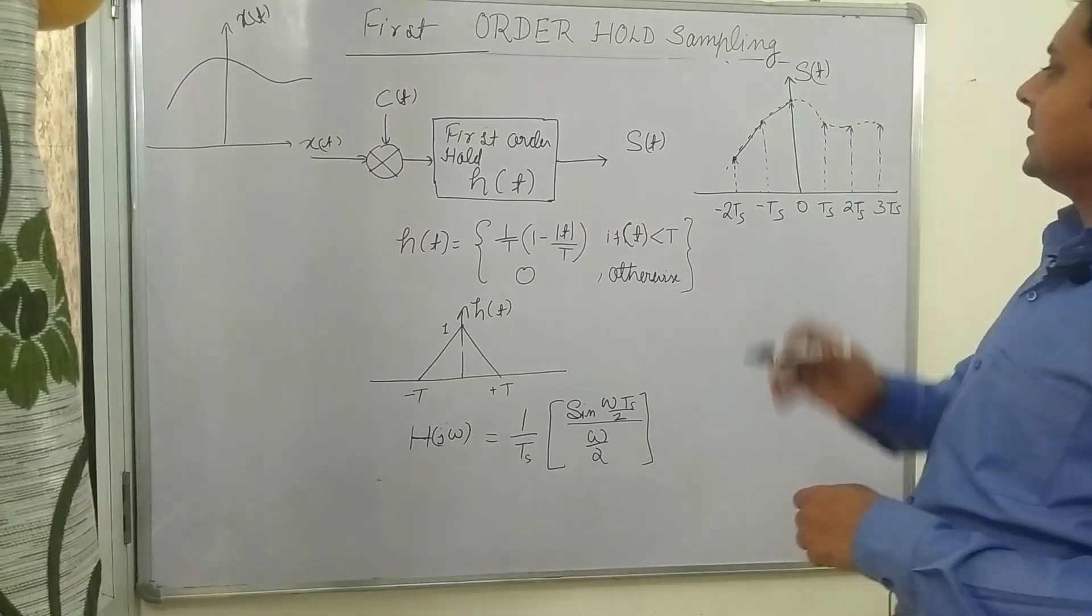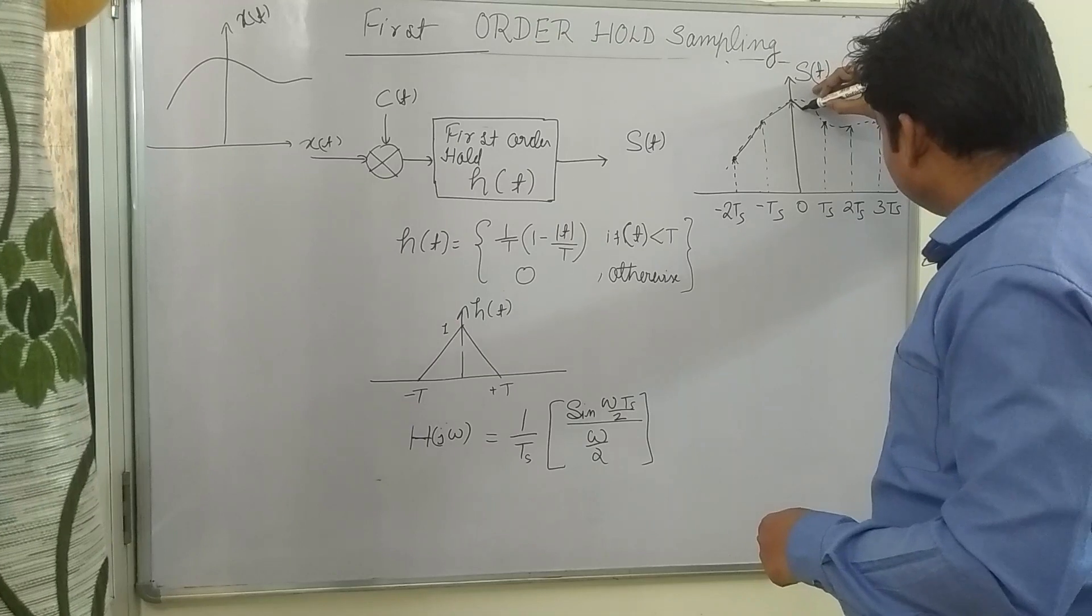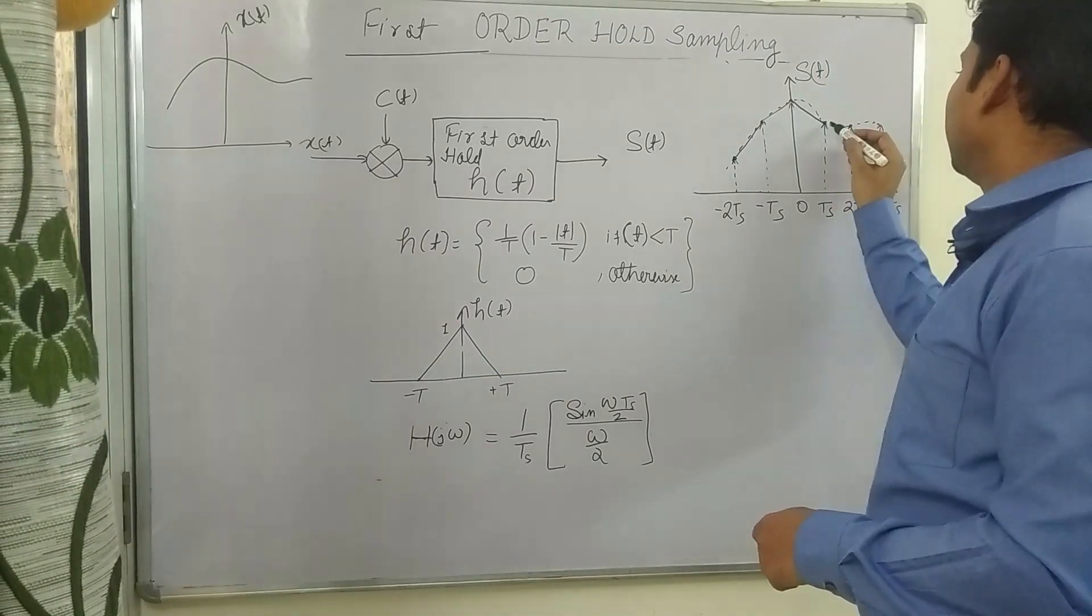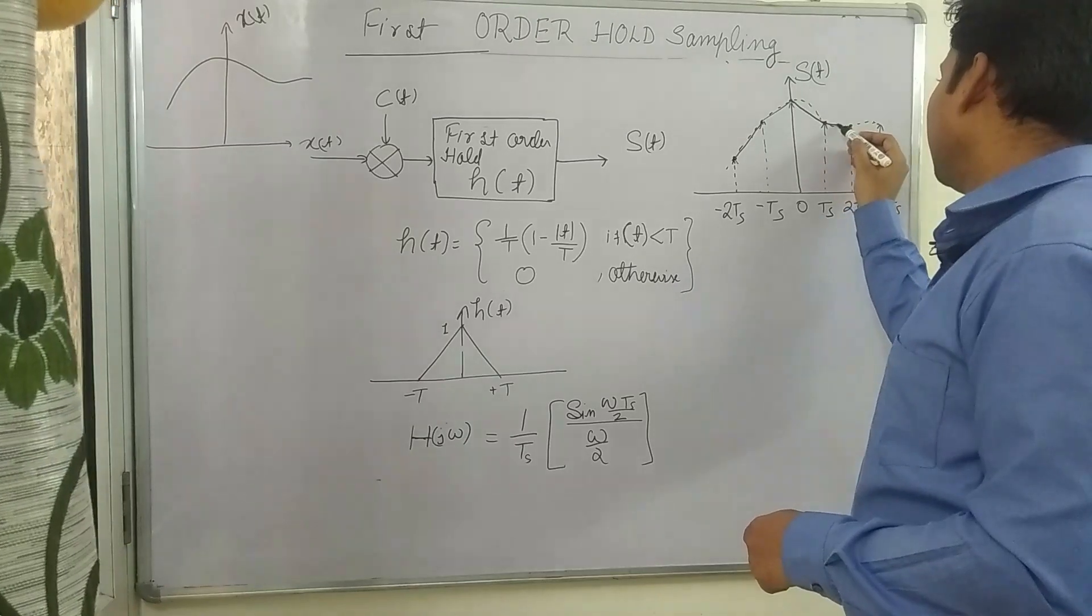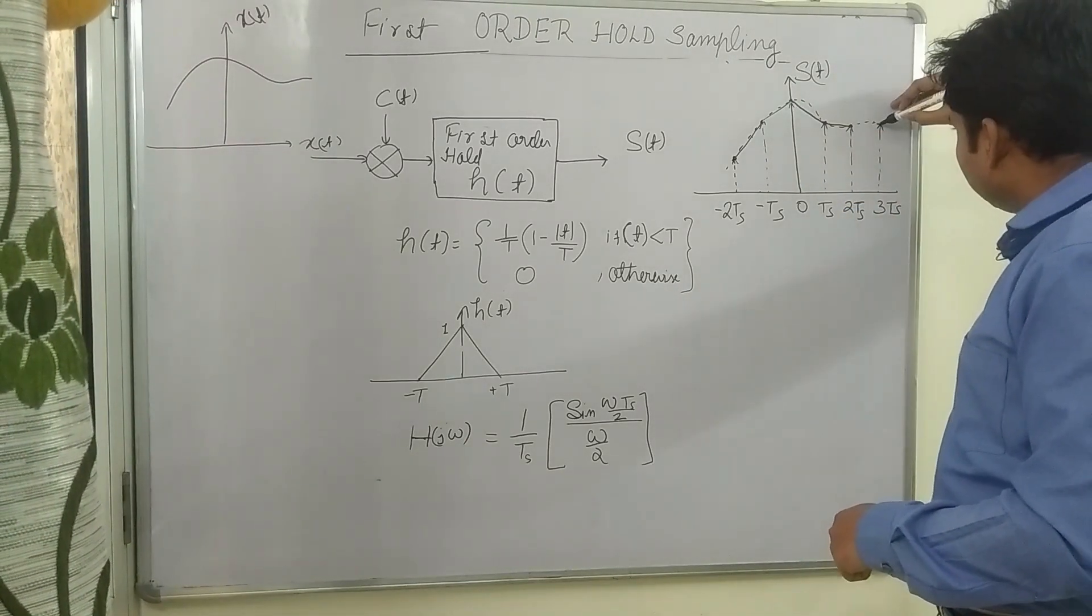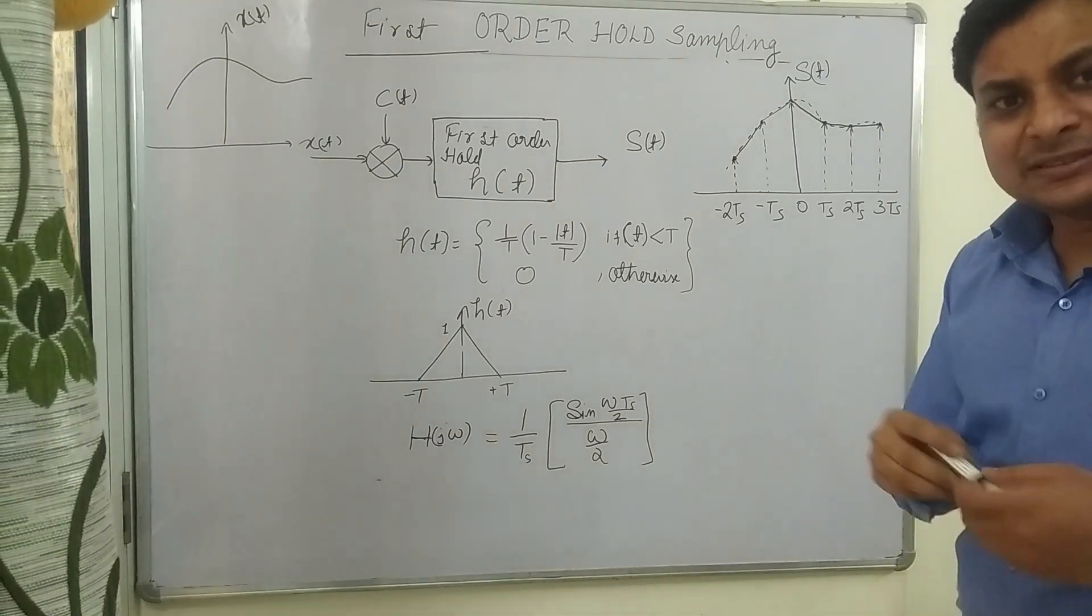here it will give this line. For the next sample it will give this line, here it will give this value. Now you can see it will represent it like this. So you can see